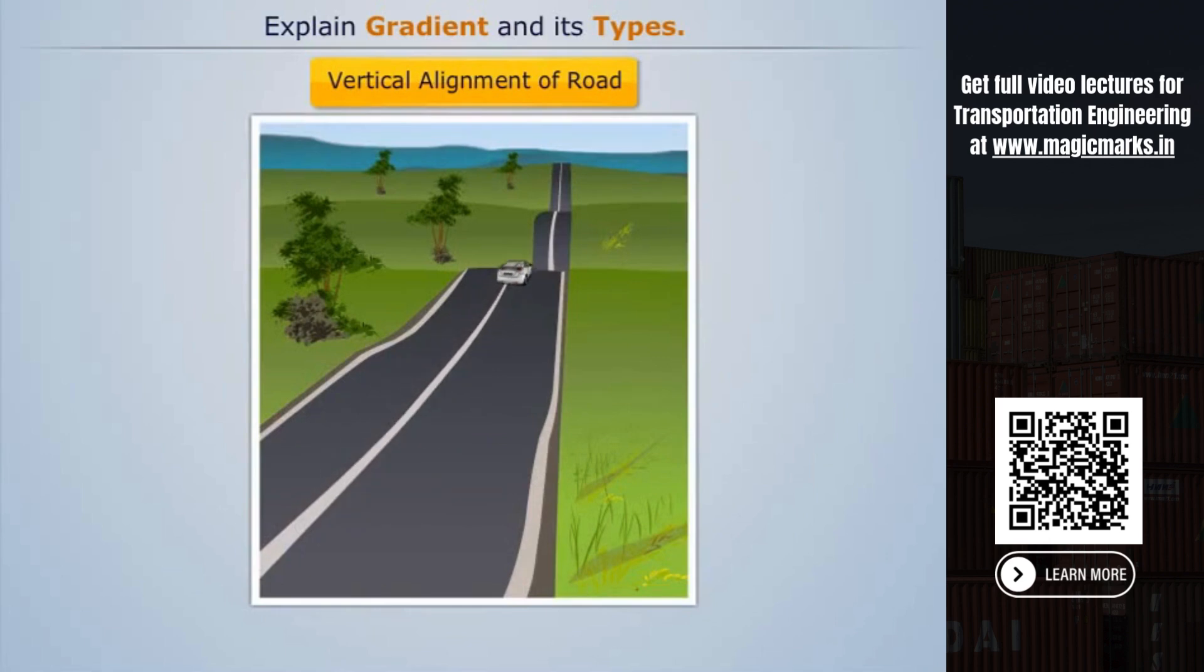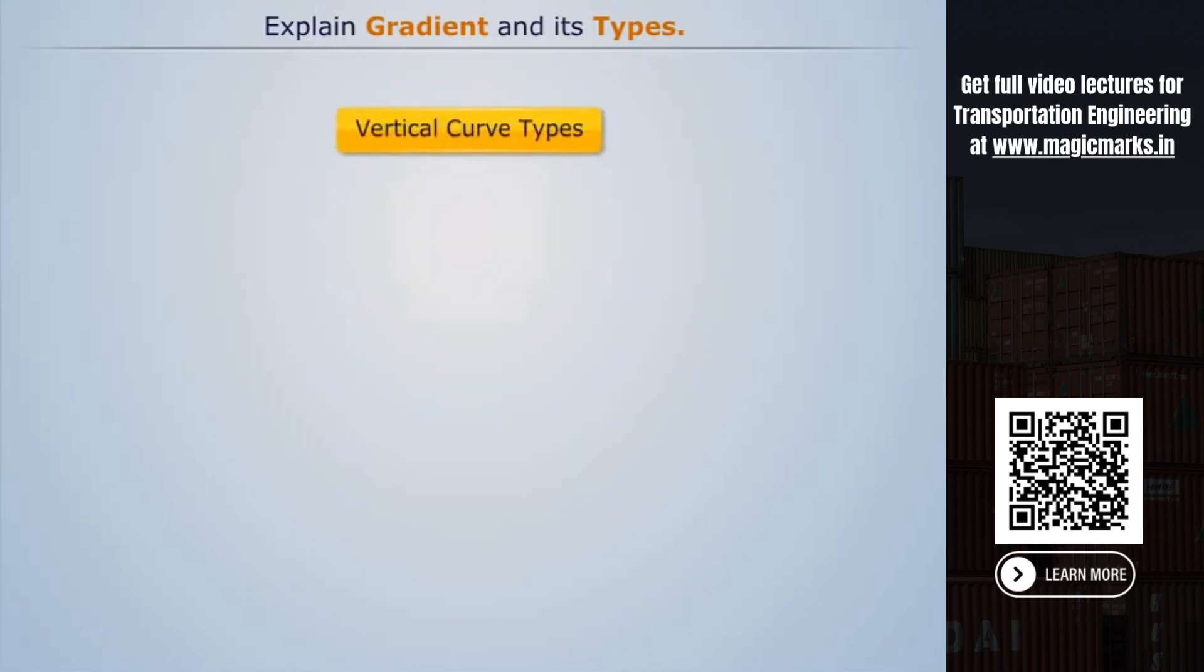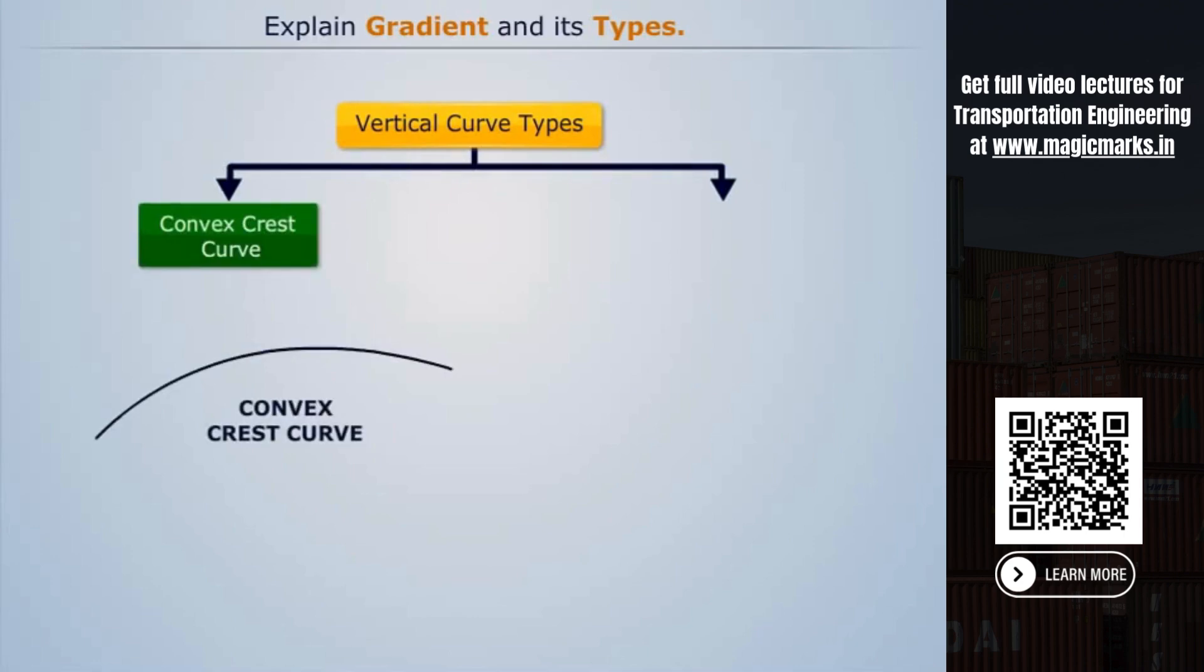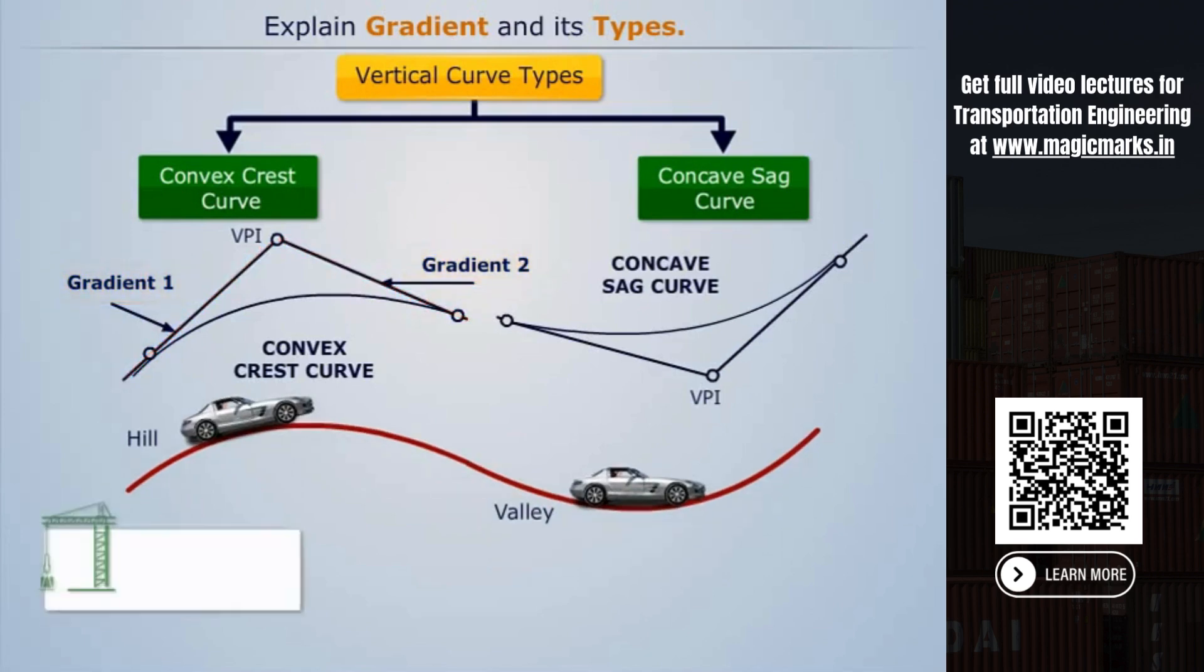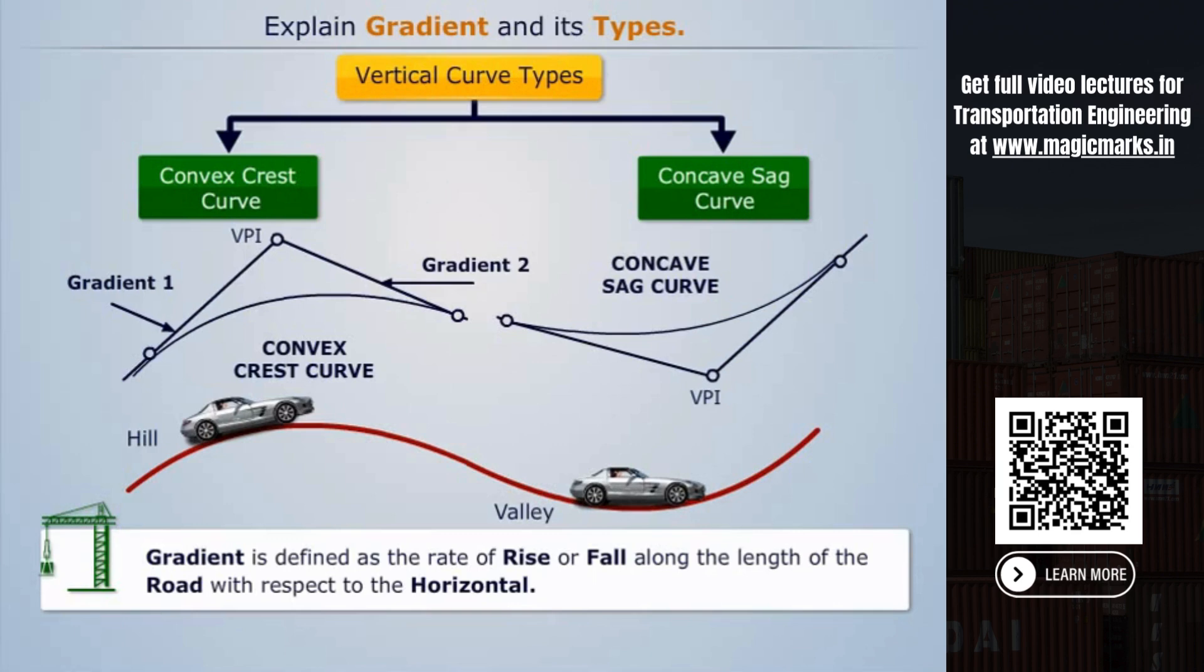According to the driver's safety and comfort, the vertical curves are of two types: convex crest curve and concave sag curve. These curves connect the two gradients. Gradient is defined as the rate of rise or fall along the length of the road with respect to the horizontal.